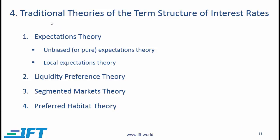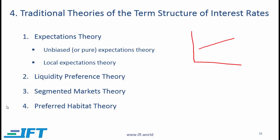We will now discuss traditional theories of the term structure of interest rates. These theories try to explain the shape of the yield curve. So if we have an upward sloping yield curve, what are the factors that explain this shape? These are the four traditional theories.